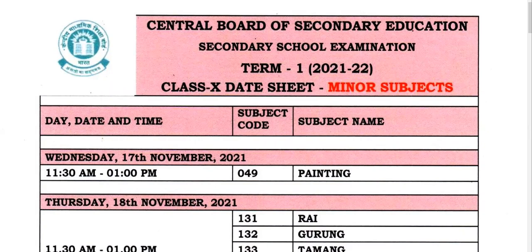It has been completed — the November last and December last exam. It has completed the 10th and 12th exam. I hope that you have the date sheet. A minor subject has come as Term 1.